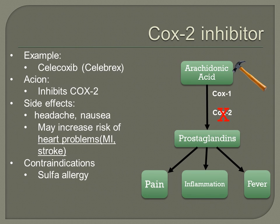COX-2 inhibitors are technically an NSAID which decreases the production of prostaglandins that cause pain and inflammation. But these medications only block COX-2, which allows the COX-1 enzyme to continue to provide protection to the stomach and intestines. This decreases the risk of ulceration and bleeding, but unfortunately these medications can increase the risk of heart problems such as MI or stroke. Celecoxib, or Celebrex, is an example, and it is contraindicated in patients with demonstrated allergic reactions to sulfonamides.